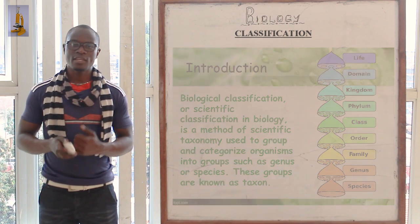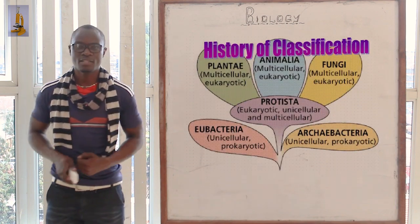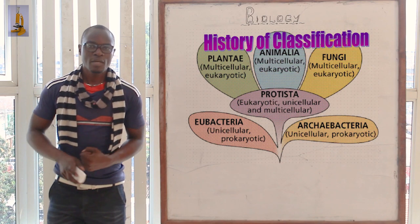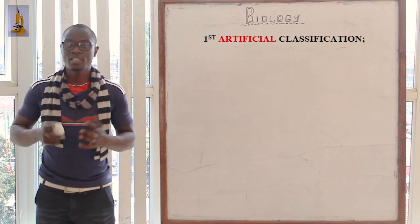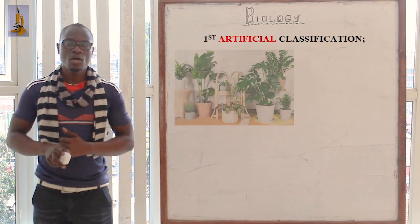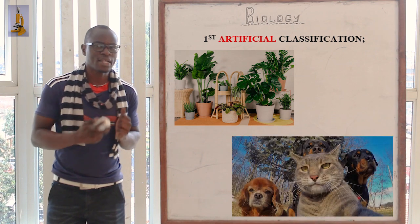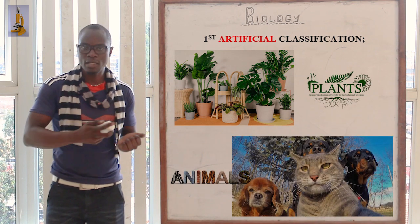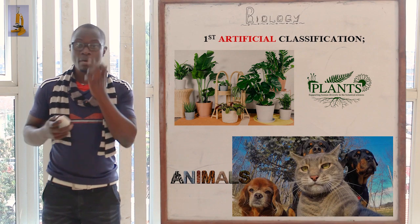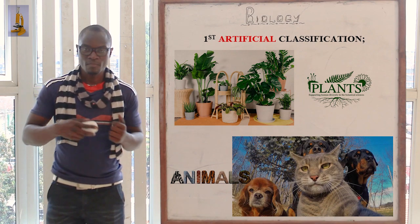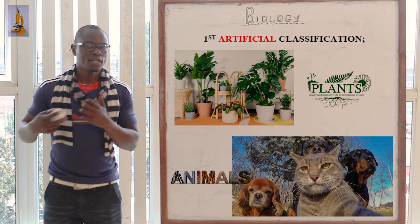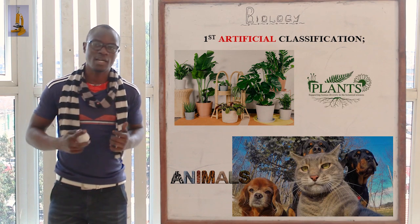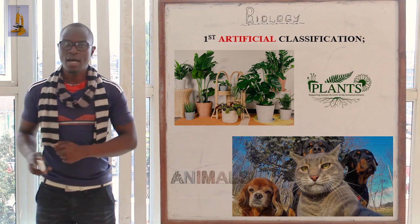Briefly, let's look at the history of classification. How did this start? Where did it come from? Long time ago, classification was majorly artificial, where living organisms were mostly classified according to only plants and animals. Remember, biology is the study of living things. In the earlier classification, living things were only classified as plants and animals.